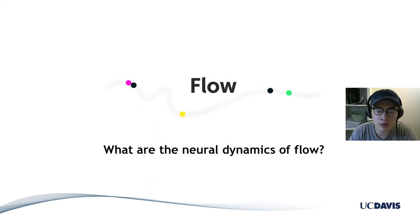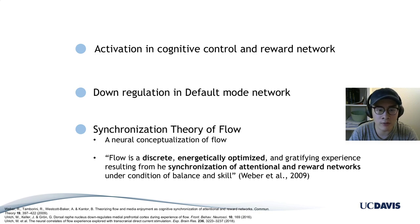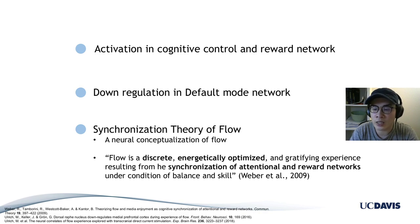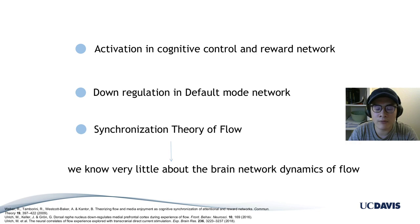Our research question here is to ask: what is the neural dynamics of flow? There are some previous fMRI studies suggesting neural correlates with the state of flow, such as deactivation in cognitive control and reward networks, and down-regulation in the default mode network. The synchronization serial flow theory suggests that flow is an energetically optimized discrete brain state, induced by synchronization of attention and reward networks.